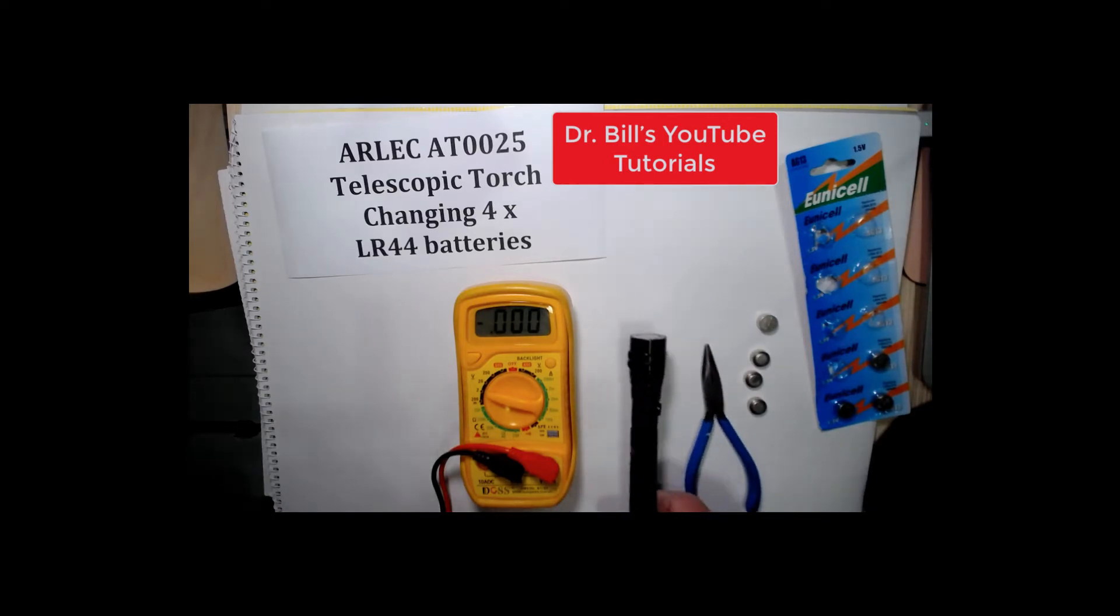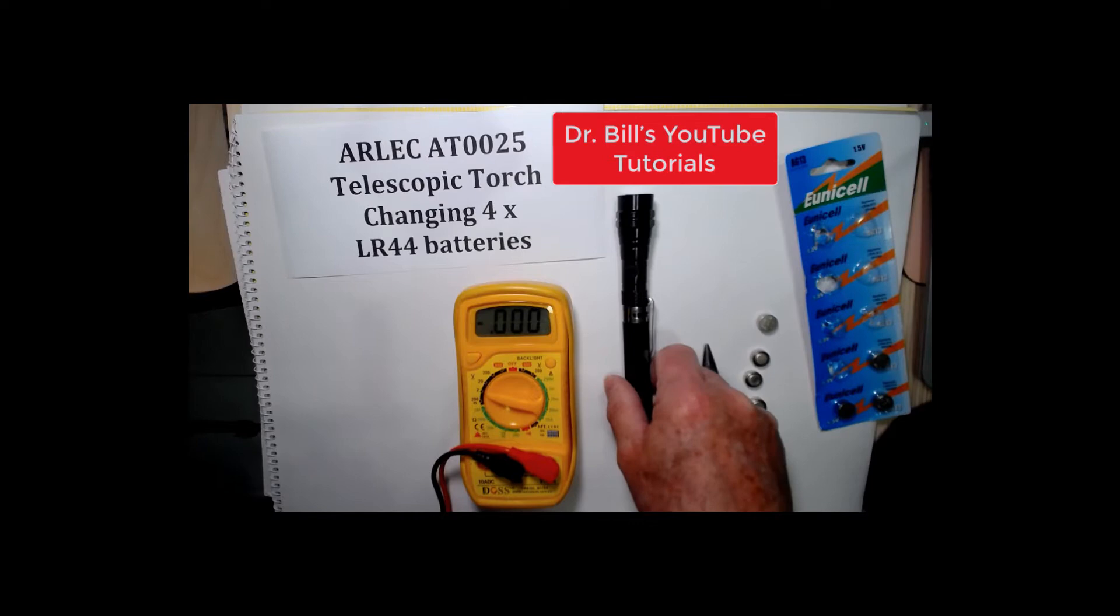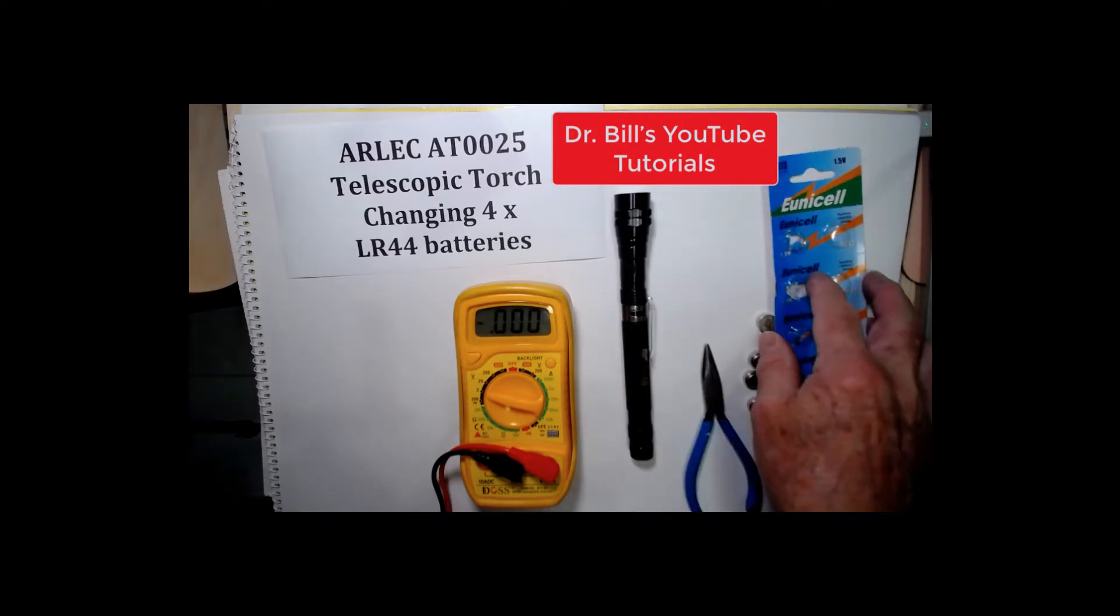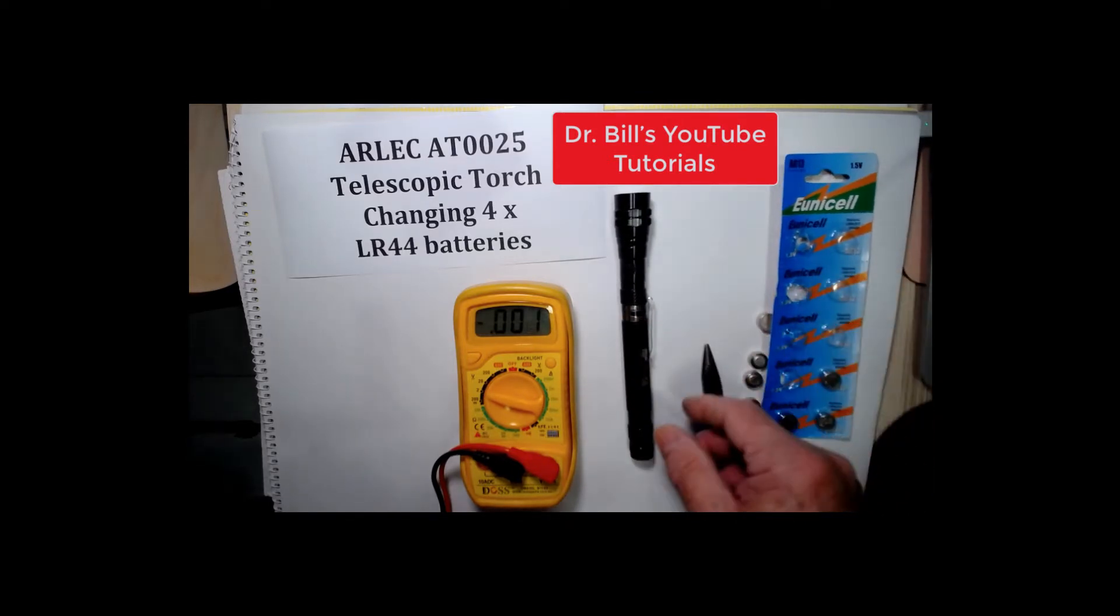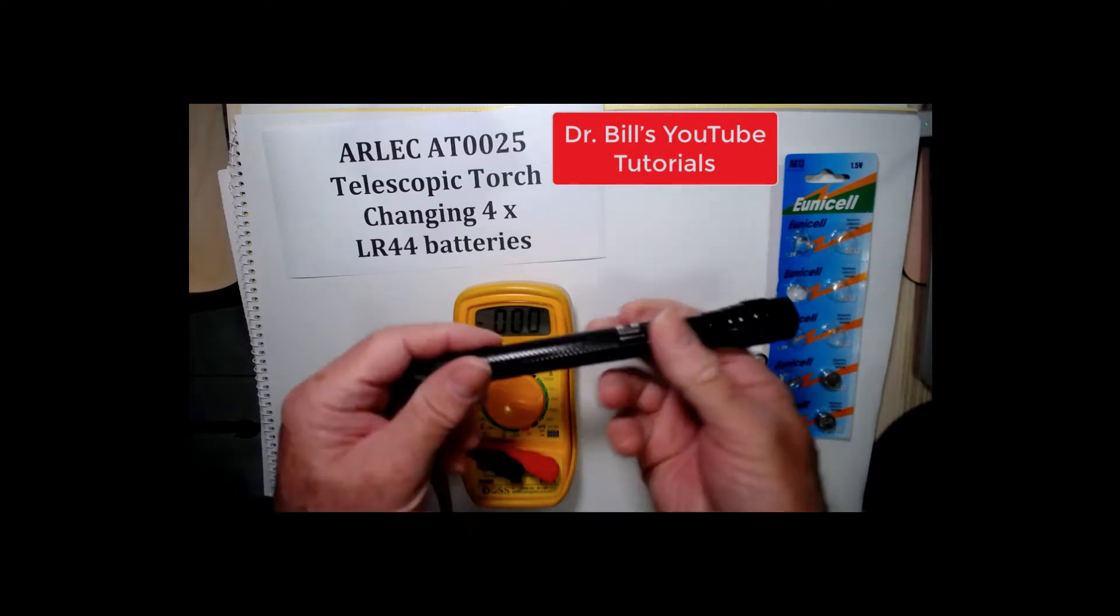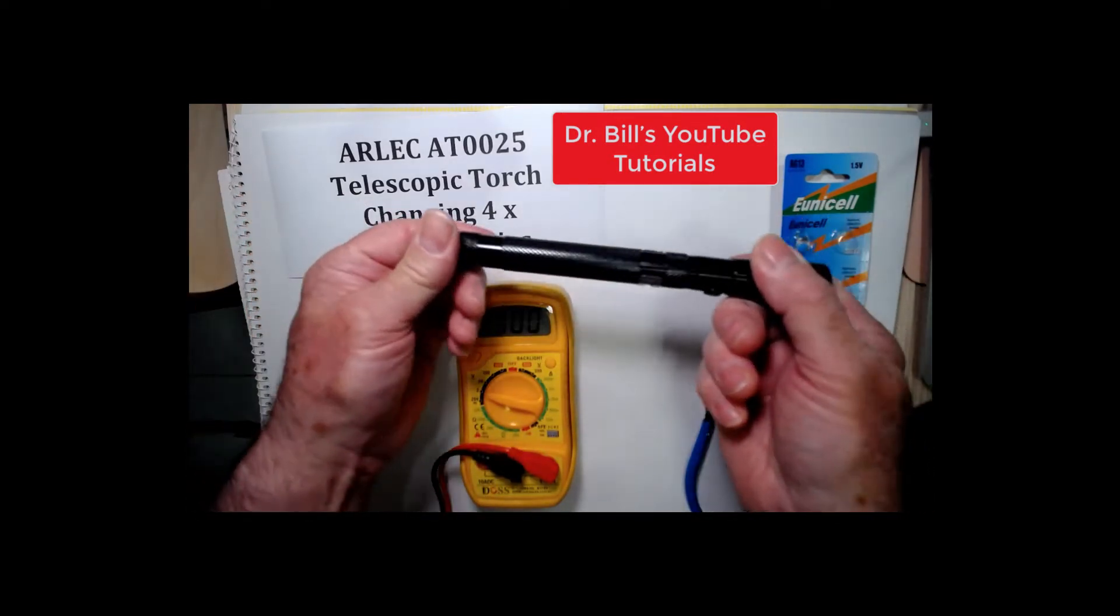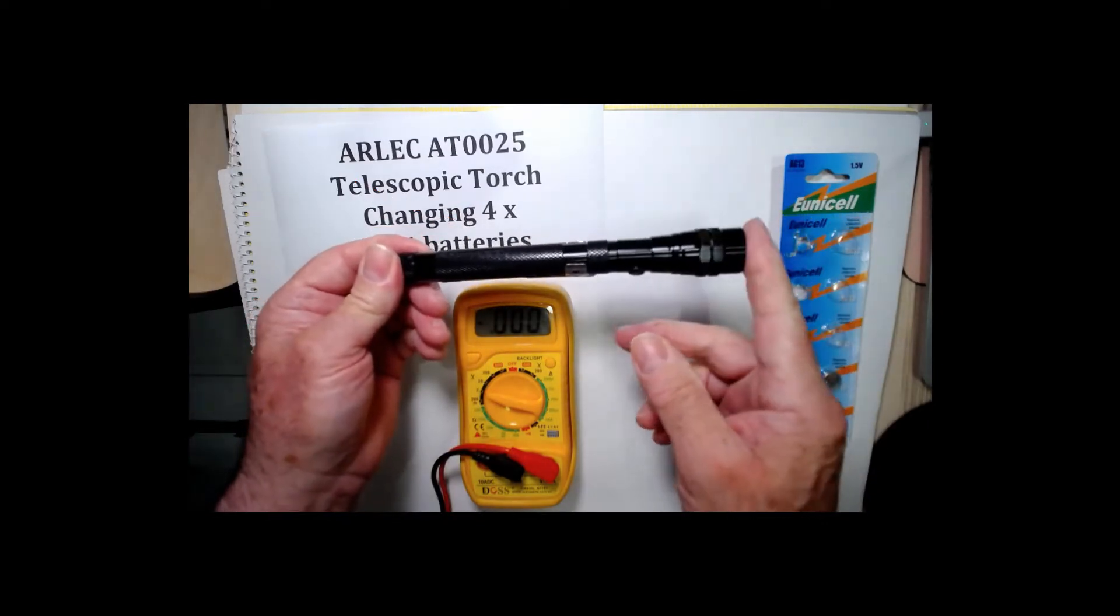This is the Arlec AT0025 telescopic torch. It has four LR44 batteries and is a telescopic torch with magnetic bottom and top.